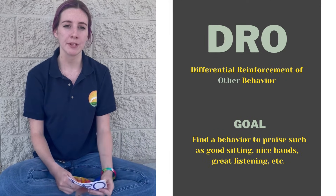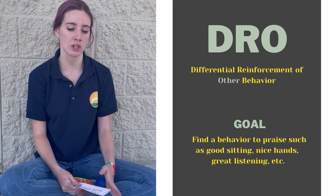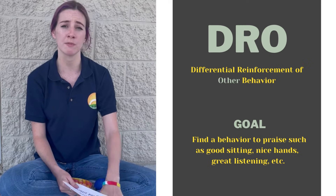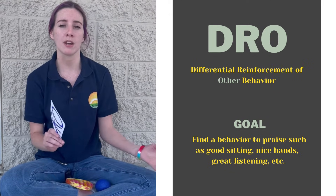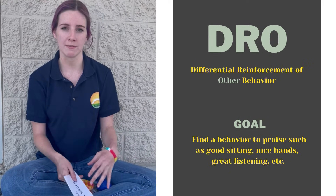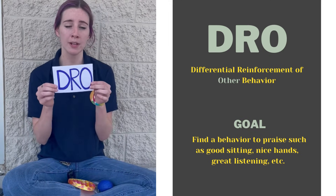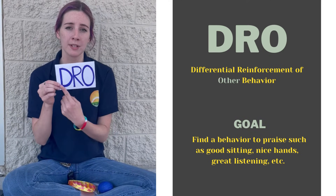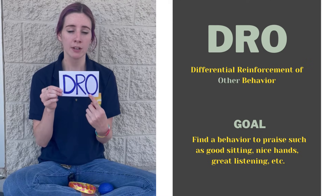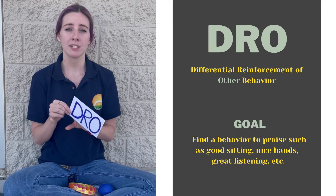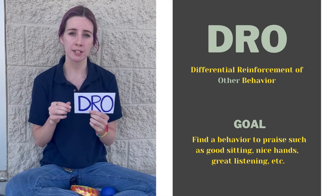So for example, if we have a kid that's struggling with aggressive behaviors such as hitting a table, we would want to reinforce a different behavior. The first example is DRO — differential reinforcement of an other behavior — so we're reinforcing any behavior that's other than the one that we want to decrease.